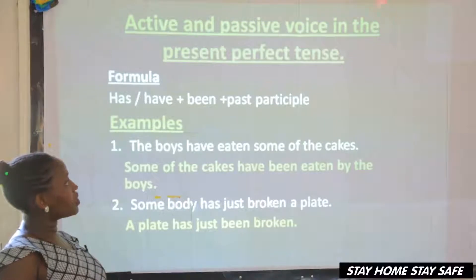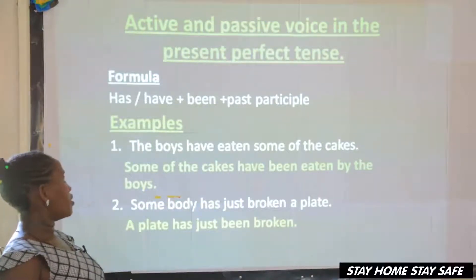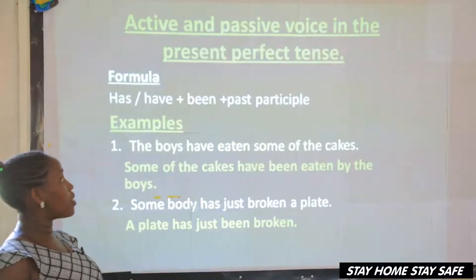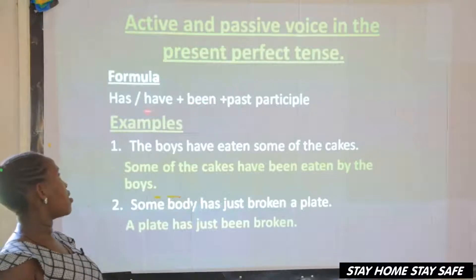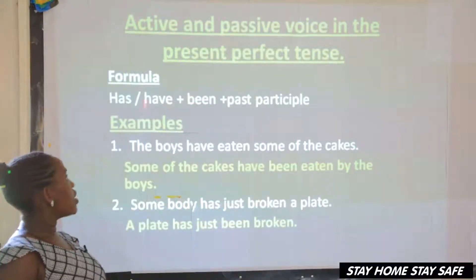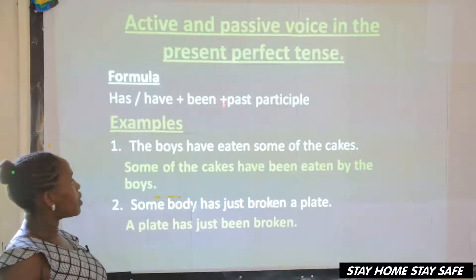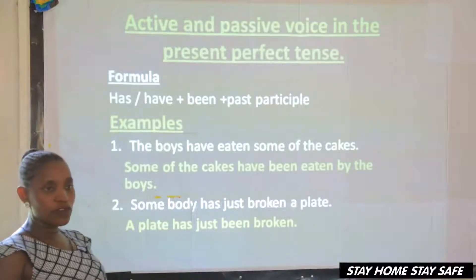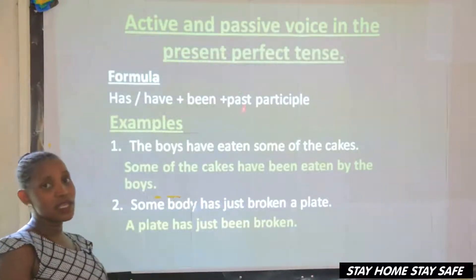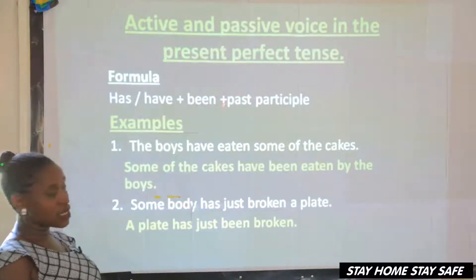Active and passive voice in the present perfect tense. The formula: the helping verbs in the present perfect tense are has and have. Helping verbs has and have, plus been, then plus a past participle form of the verb. So we have: has been, have been — like that.